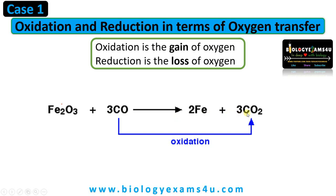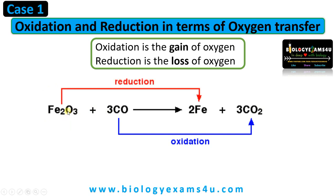Both the reactant side and the product side have 3CO. So the rest of the oxygen is donated by this iron oxide. Iron oxide has donated this oxygen and is reduced to form iron. So reduction has happened where loss of oxygen takes place in the case of iron oxide. The point is oxidation and reduction reactions are coupled.